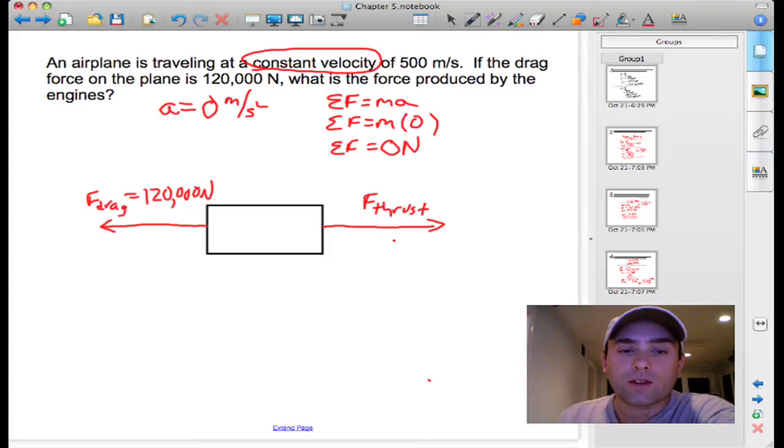Okay, if the sum of these forces is zero newtons, we know that this is actually in equilibrium, even though it's moving at 500 meters per second, that it's not accelerating or decelerating. So these forces, the drag force and the thrust force, must be balanced as a result. And so we know that the force of thrust is 120,000 newtons.